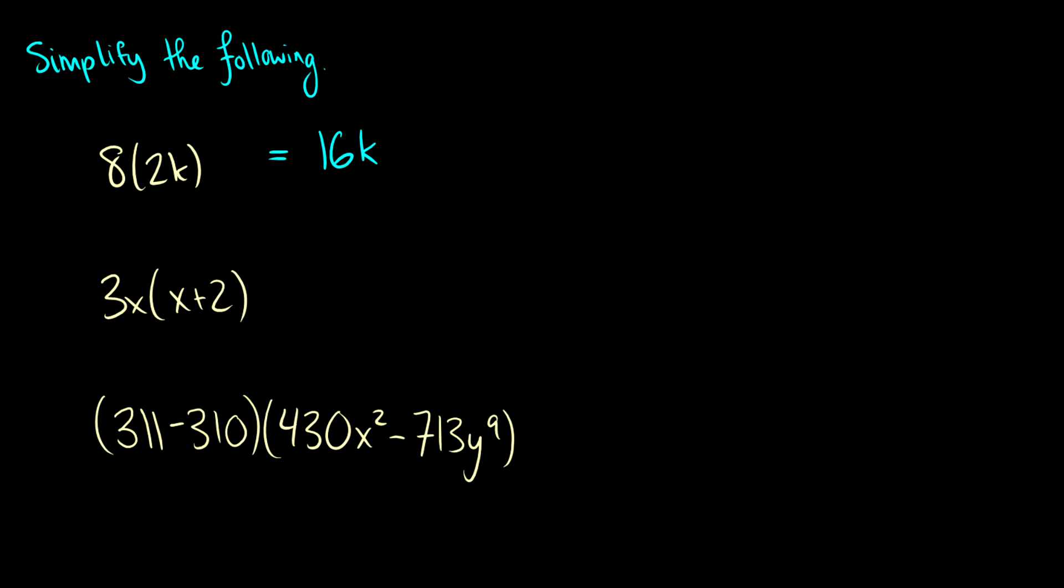3x times x plus 2. Well, we take this 3x and we send it off to the x. So that's going to be 3x times x, which we know is just the same thing as saying x squared plus 3x times 2, which is just going to be 6x.